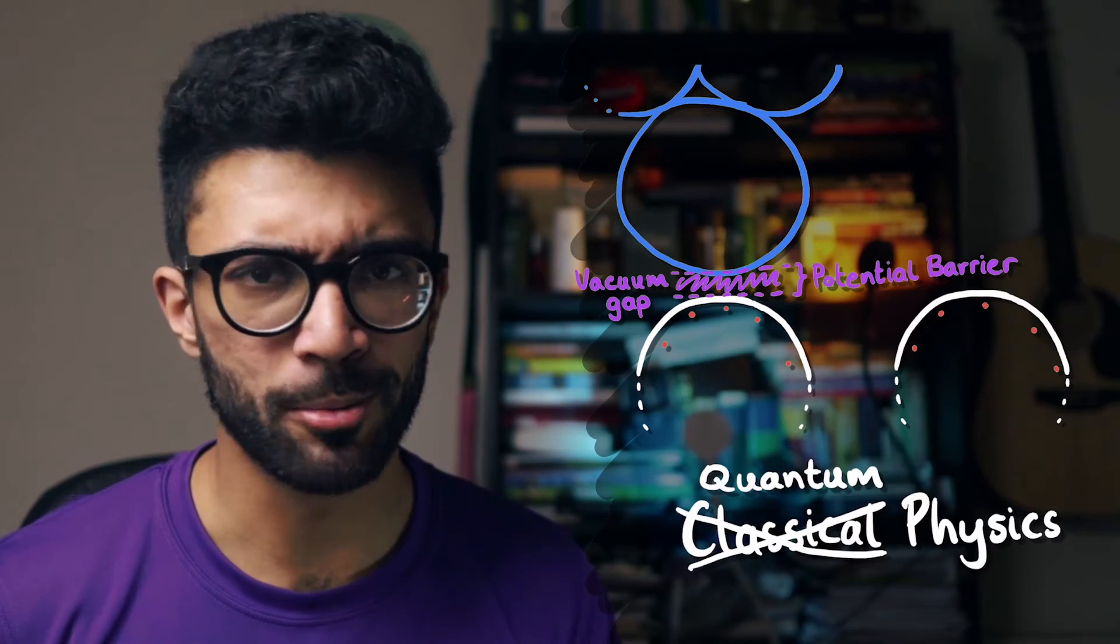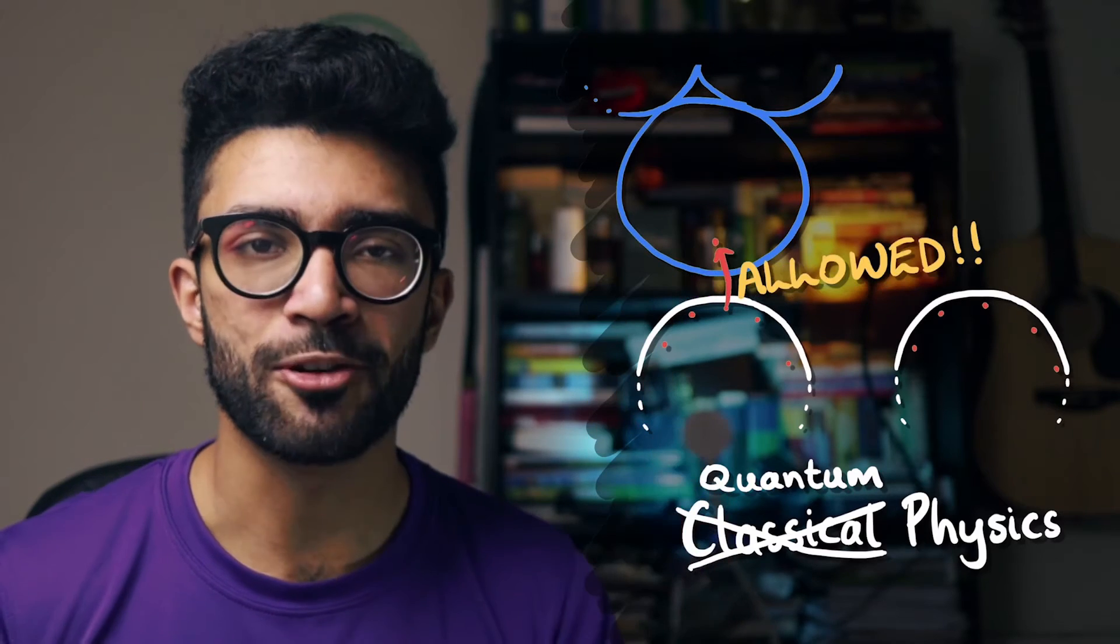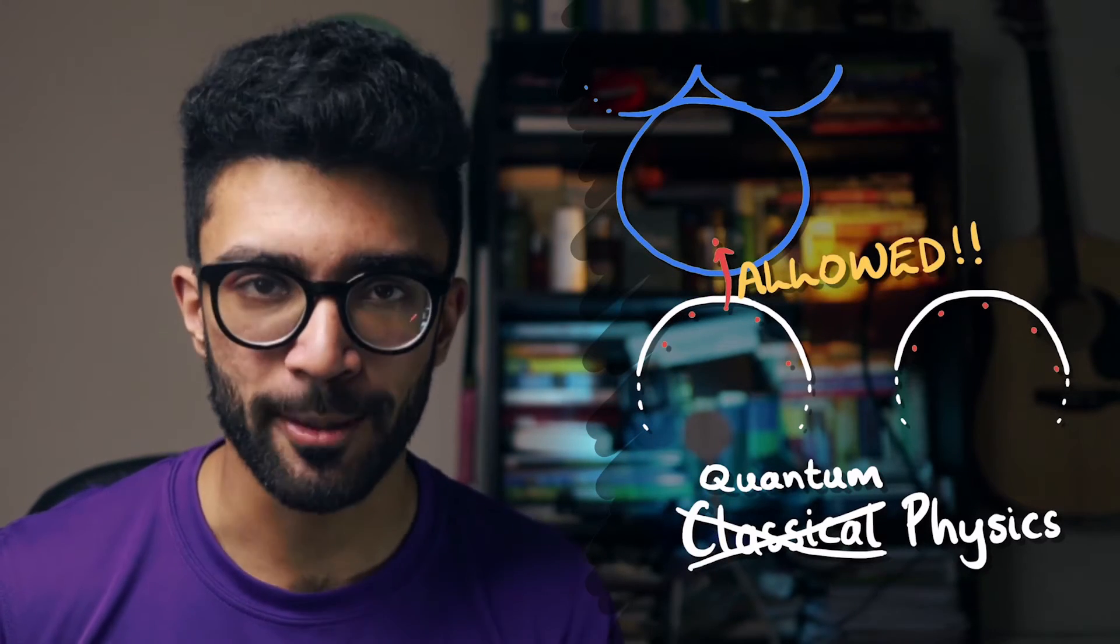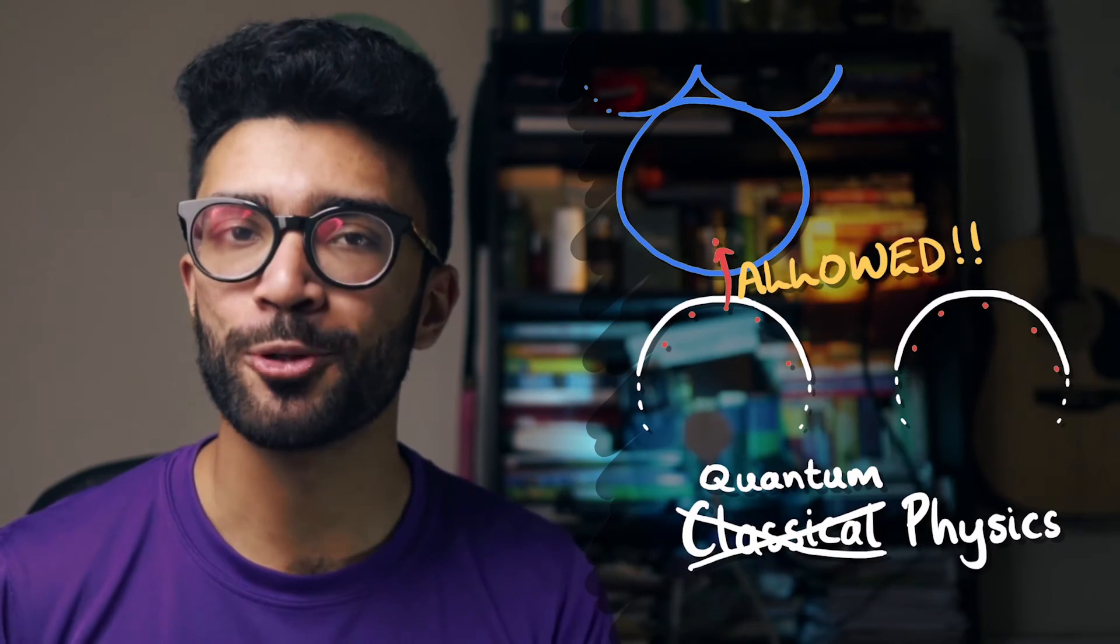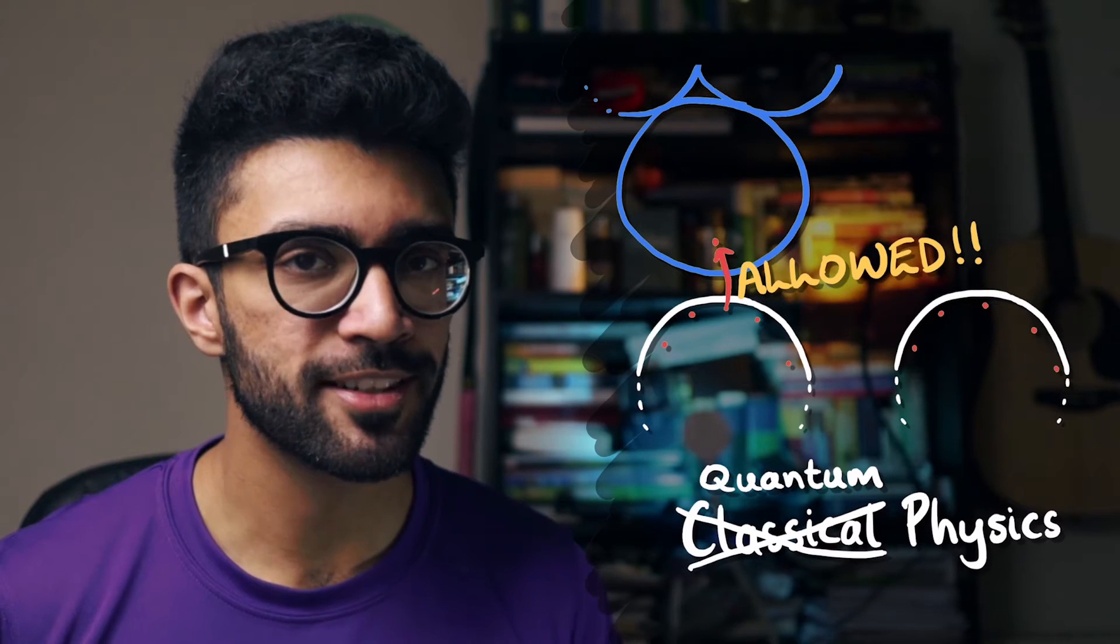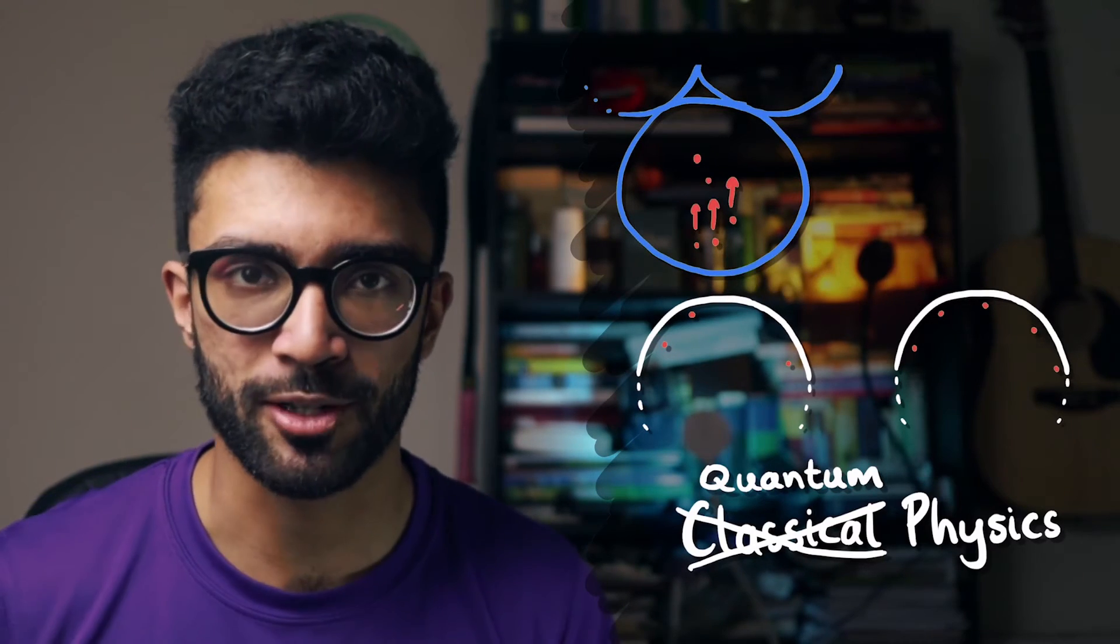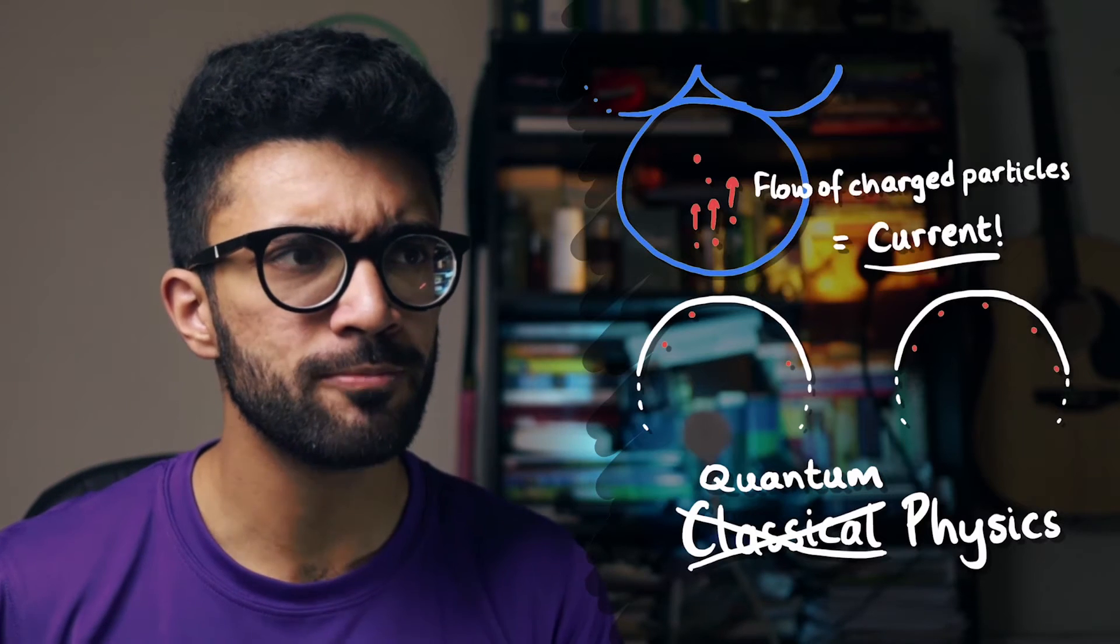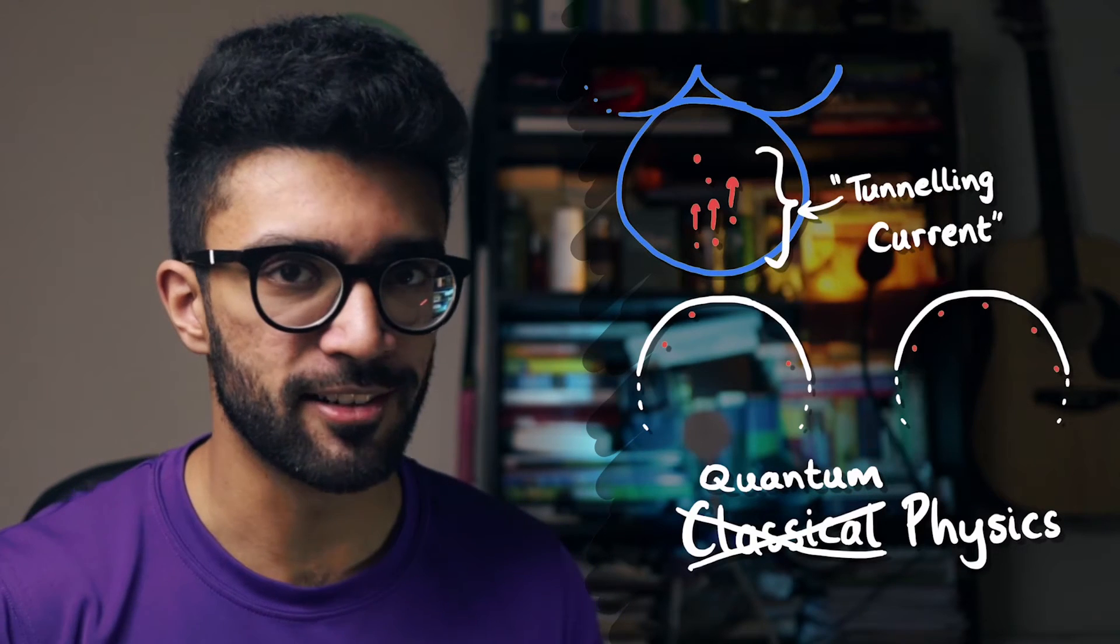However, quantum mechanics is really weird. It allows electrons in the carbon atoms to tunnel across the vacuum gap into the metallic tip. This is quantum tunneling - electrons moving from the graphite sample to the metallic tip through a potential barrier. Now electrons are charged particles and they flow upward through the metallic tip once they tunnel across the gap. So what's a flow of charged particles? Well it's a current, and this flow of electrons is called a tunneling current.